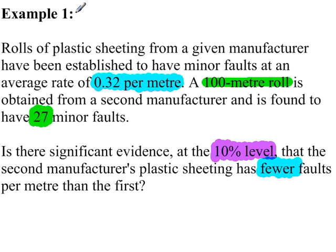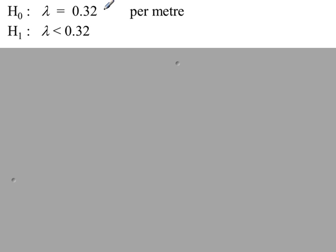Example 1. We've got rolls of plastic sheeting and there are faults in this plastic sheeting. The value of lambda given is 0.32 for a 1 meter interval, and we're looking for fewer faults. So our H0 is 0.32, H1 less than 0.32.